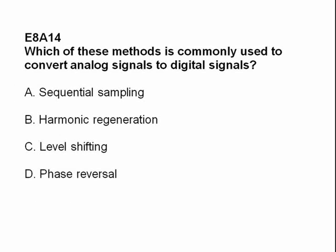Which method is commonly used to convert analog signals to digital signals? A: sequential sampling; B: harmonic regeneration; C: level shifting; or D: phase reversal. Answer: A — sequential sampling.